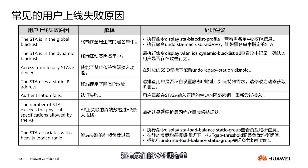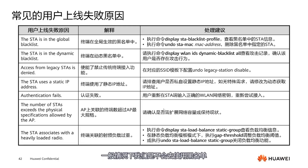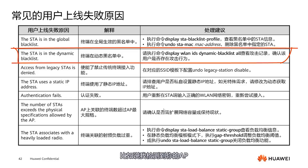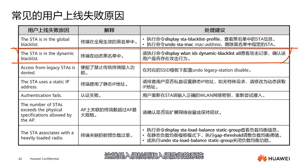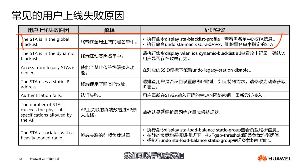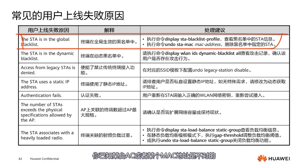IDS is an intrusion detection system. For example, if the system detects an AP constantly sending useless or attack messages, it will directly add that AP's MAC address to the blacklist — this is the intrusion detection and prevention system, which has an automatic blacklist feature. Another is the globally effective blacklist, which can be manually added by an administrator who wants to block a known external MAC address. The third issue — the prohibition of legacy terminals — is quite rare and can be overlooked.